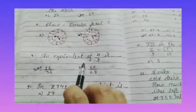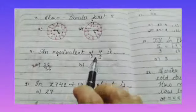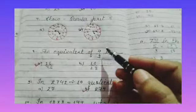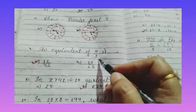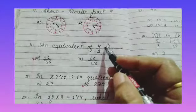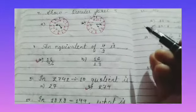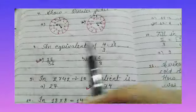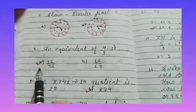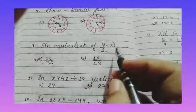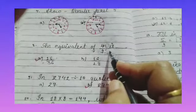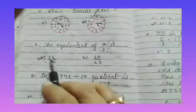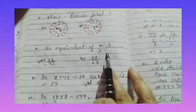An equivalent fraction of 4 by 9. So children, whenever we have to find the equivalent fraction, first we will multiply the numerator as well as denominator with 2 or 3 or 4 but by the same number to the numerator as well as denominator. So correct answer will be part A, 16 by 36. So if we multiply 4 to the numerator and 4 to the denominator, then 4 fours are 16 and 9 fours are 36. So answer is part A.